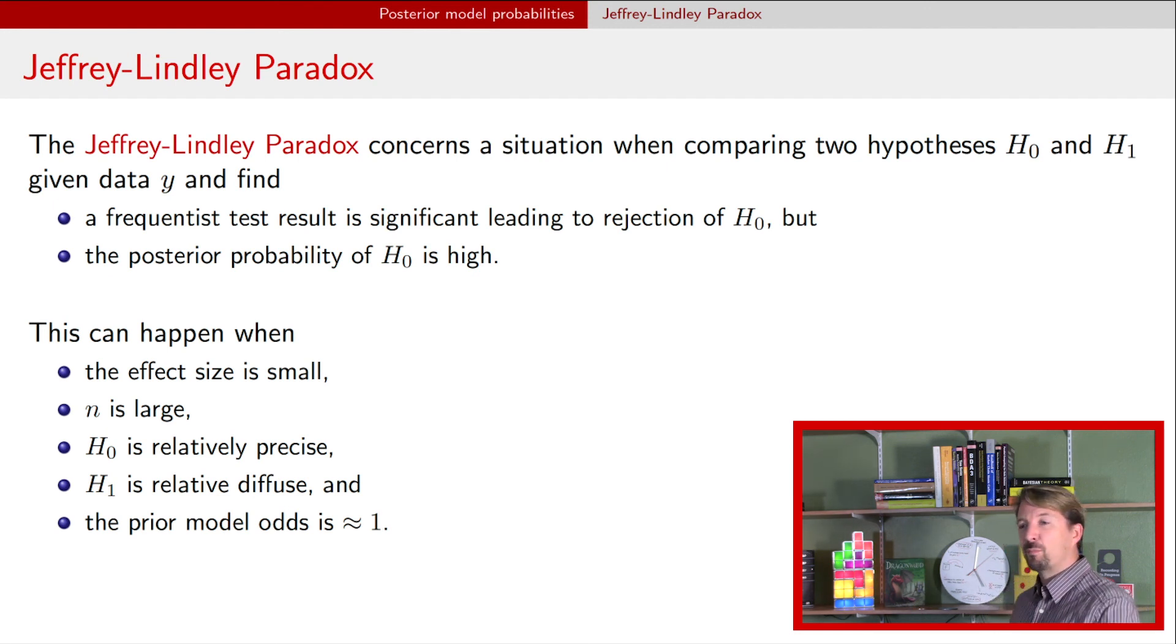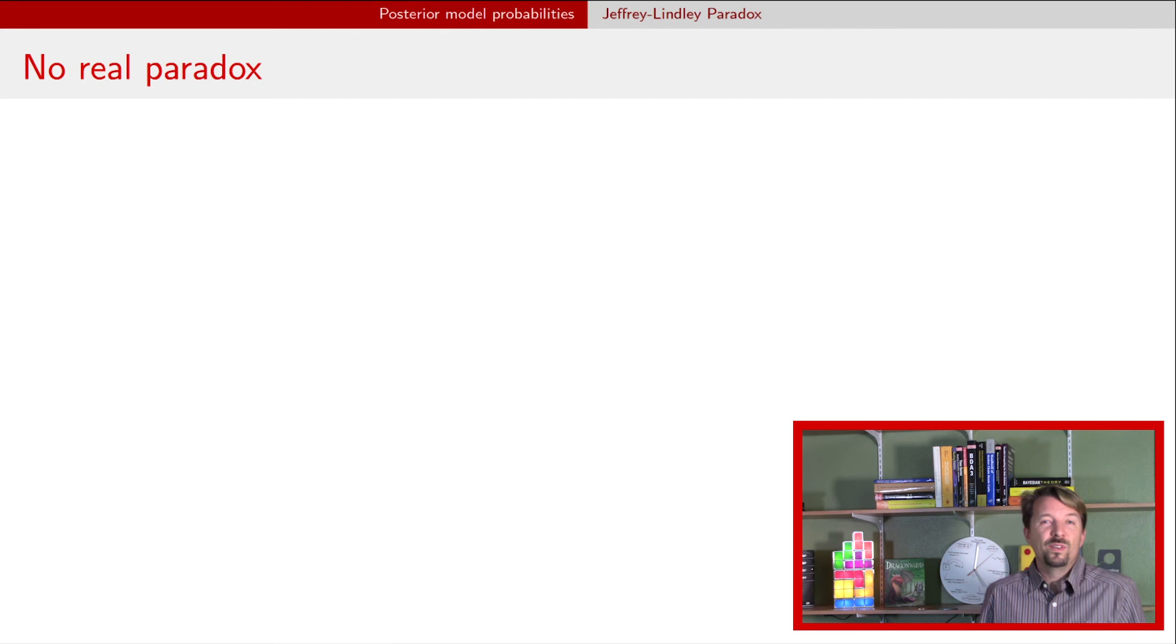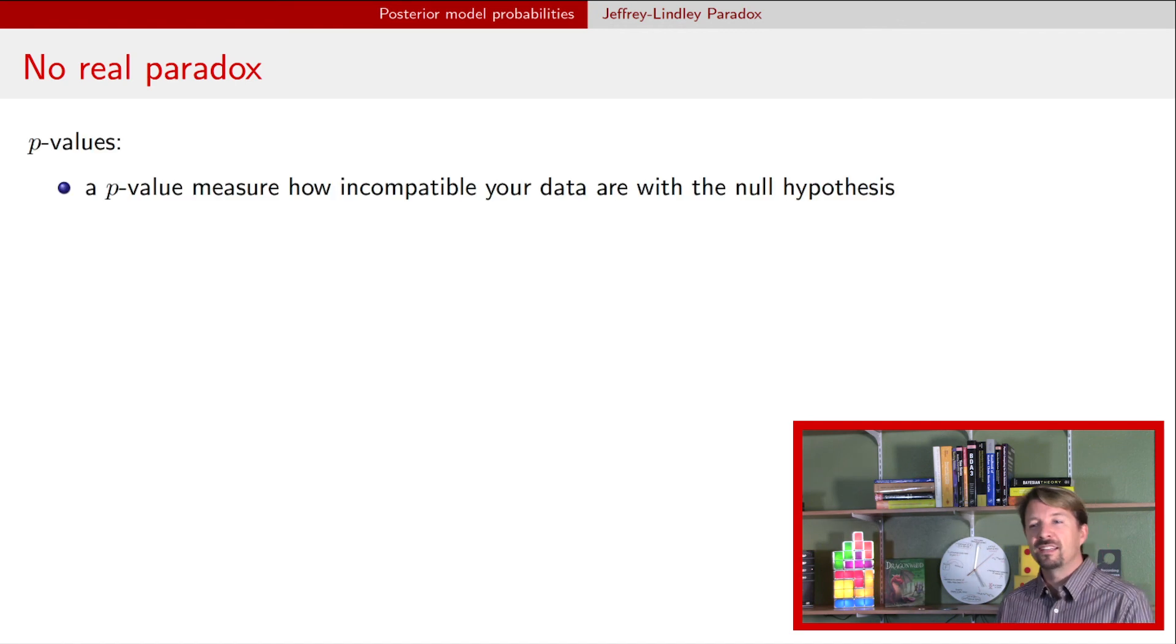Now, is this a problem? And I would say no, this is not really a problem, because there's not really a paradox here, even though it's given in the name on the previous slide. Instead, really, you have to think about what p-values do and what posterior model probabilities do.